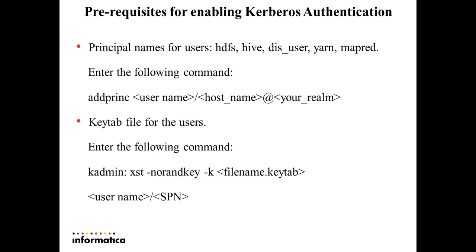Prerequisites for enabling Kerberos authentication. As specified earlier, users in Kerberos authentication are represented as principals. Hence, Service Principal Names for the Hadoop users — YARN, HDFS, Hive, etc. — need to be created using the command addprinc with the syntax specified. Once the SPNs are ready, we need to create keytabs for the same. A keytab is a file containing pairs of Kerberos principals and an encrypted copy of that principal's key. The keytab files are unique to each host since their keys include the hostname. This file is used to authenticate a principal on a host to Kerberos without human interaction or storing a password in plain text. Also, the krb5.conf file under the /etc folder needs to be updated to point to the KDC on the Hadoop cluster. Creating SPNs and keytabs is the first step of having a Kerberized Hadoop cluster.